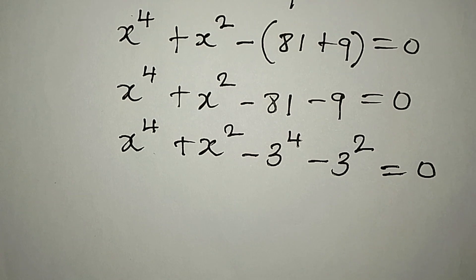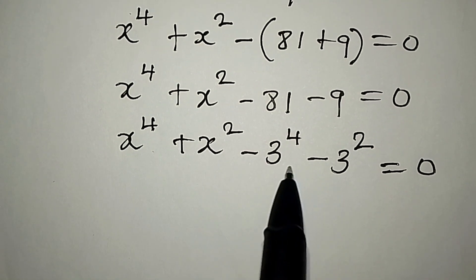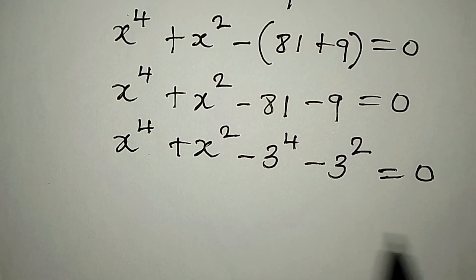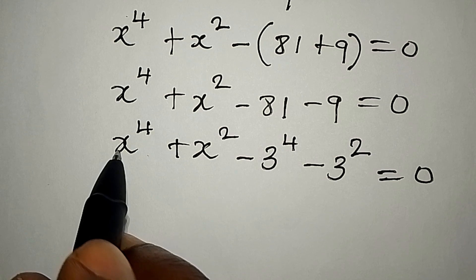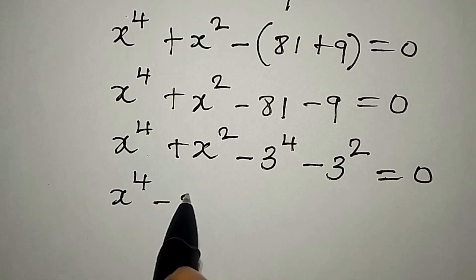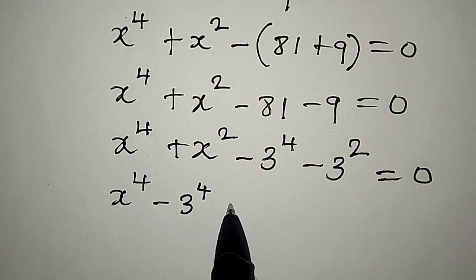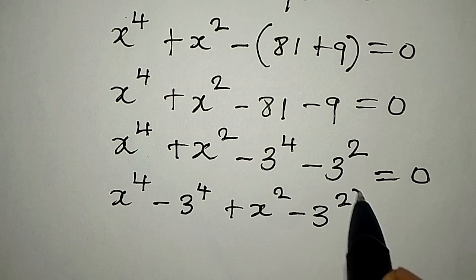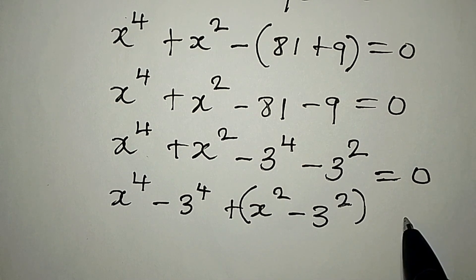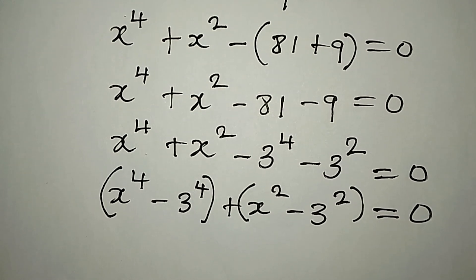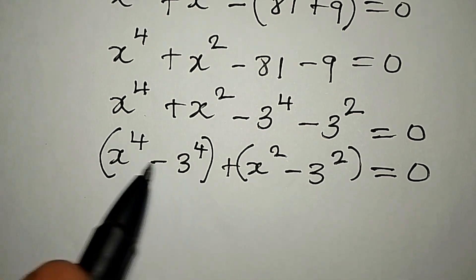Now we can compare what we have here and what we have over there, but we have to solve this completely. We're going to bring this and this together, and this and this together — so x to the power of 4 minus 3 to the power of 4, then plus x to the power of 2 minus 3 to the power of 2, and this is equal to zero.